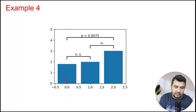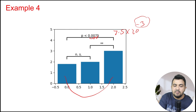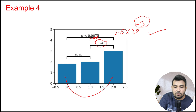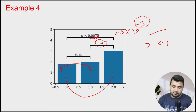In another example, a p-value written in scientific notation as 7.5 × 10⁻³ has an exponent greater than minus 2, meaning they are significant — shown with a double star, indicating less than 0.01. But in this example, two other comparisons are non-significant.